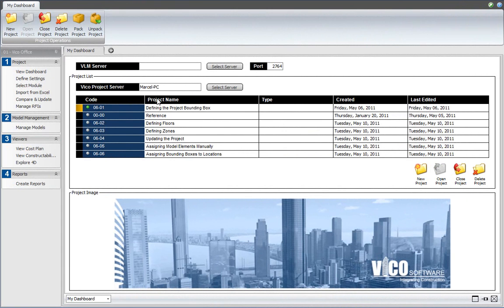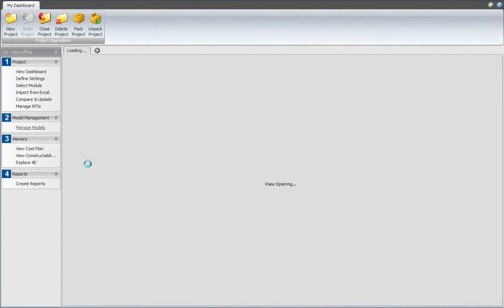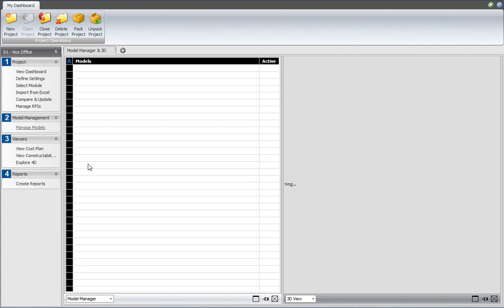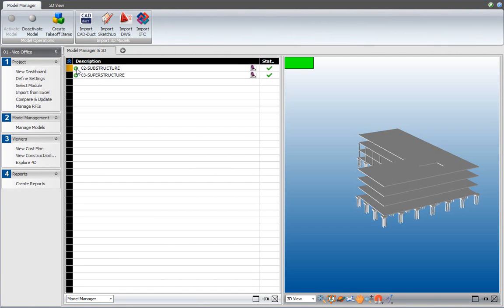In the dashboard, I have opened my project, and I am now going to the Manage Models view set to open the Model Manager. As you can see, I opened or activated two models, the substructure and the superstructure, and I activated the substructure first.